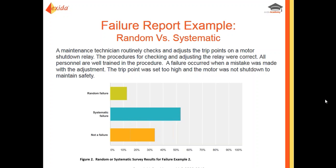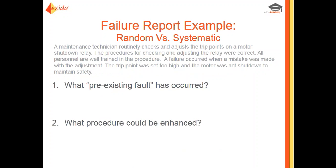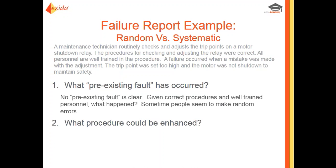What pre-existing fault occurred here? There isn't necessarily a clear pre-existing fault — the maintenance worker was given correct procedures and was well trained. Sometimes people make random errors; humans make mistakes. Maybe he was having a bad day, distracted by something at home, or rushing to finish work — mistakes happen, and that's part of life.